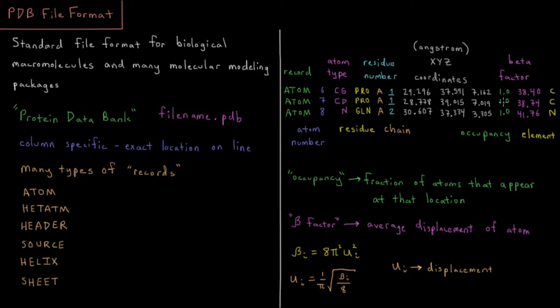We have a value called the occupancy factor, which comes from the crystallography. What fraction of the time is the atom at this particular location? Maybe you have some different conformers and maybe half the time it's here and half the time it's in a different place.